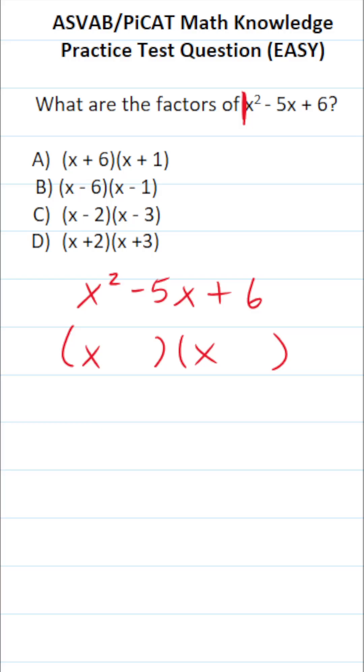Specifically, here's what we're looking for. We're looking for two numbers that multiply to 6 but add to negative 5. So let's start by listing some factors of 6.